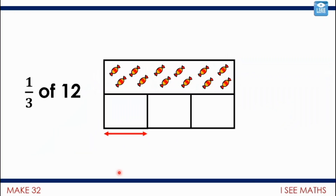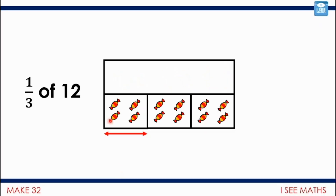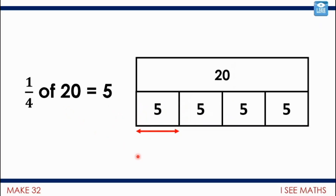We might have started by doing something like a third of twelve. You might have had twelve objects split into three equal groups - a third of twelve is four. Notice: four times three equals twelve. Then we moved to using a bar model, so you didn't actually need physical objects. For a quarter of twenty, you need to know 20 divided by 4, which gives five.